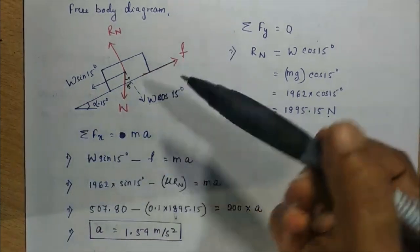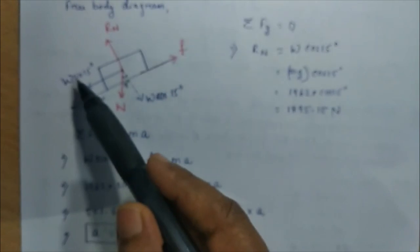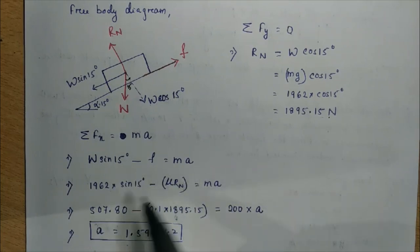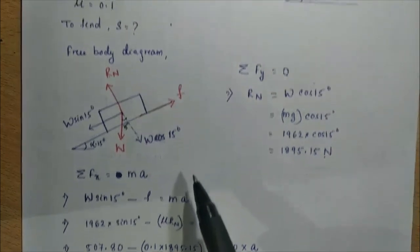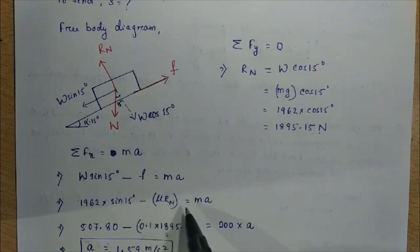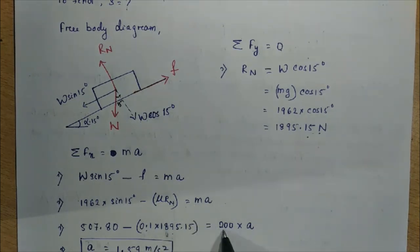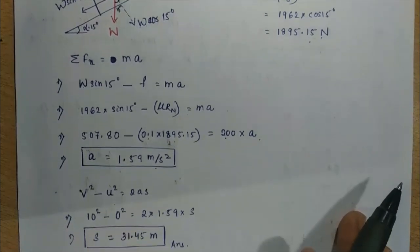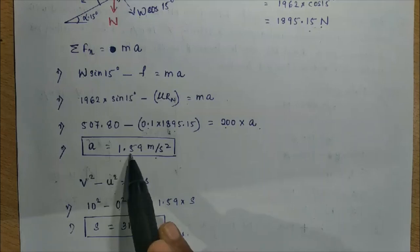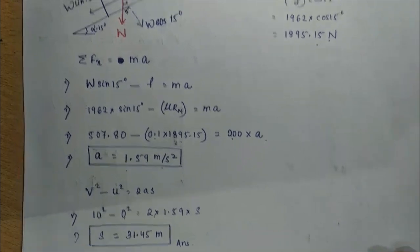Substituting: 1962 sin 15° minus 0.1 × Rn equals 200 × A. Solving gives the value of A. Then using the equation V² minus U² equals 2AS — with V equals 10, U equals 0, and A equals 1.59 — we get S equals 31.45 m. This is the distance the body must travel along the incline.